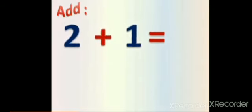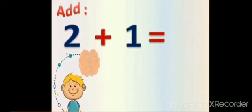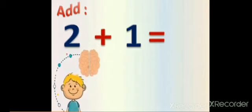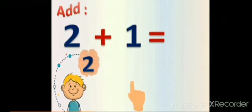For example here, 2 plus 1 equals? At first, put the big number in your mind. And the big number here is number? Super — number 2! And put the small number on your fingers. The small number here is number 1. Then count after the big number. Count after 2. After 2: 3. Then 2 plus 1 equals? 3.